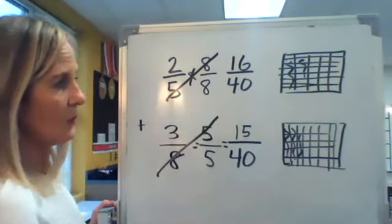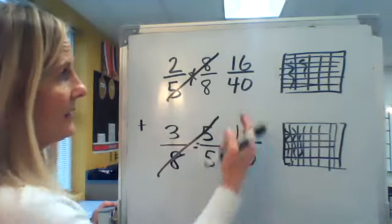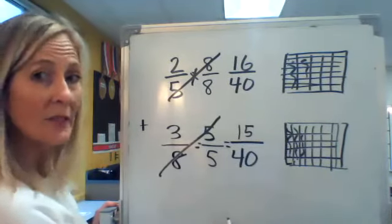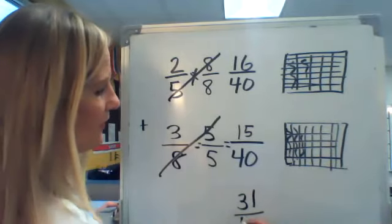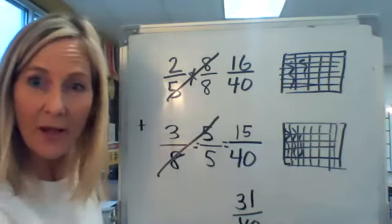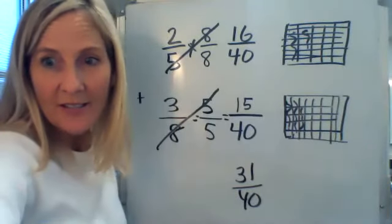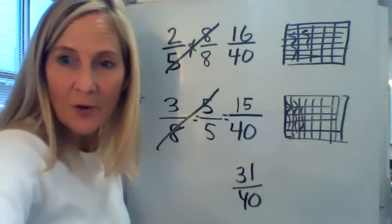I don't need that anymore. Now all my problem is, is 16 fortieths plus 15 fortieths. There's the bell. 31 fortieths, just in time for the bell. All right, go ahead and try that today on your work.